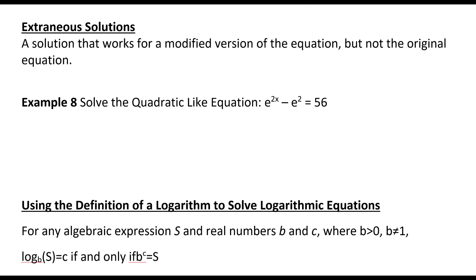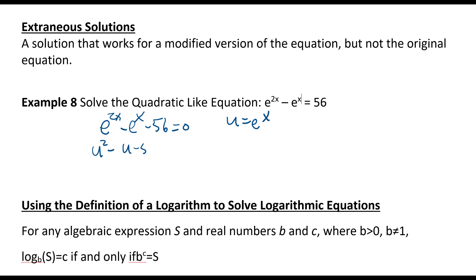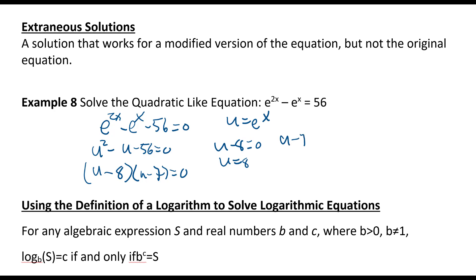Let's talk about extraneous solutions — a solution that works for a modified version of the equation but not for the original. For the equation e^(2x) minus e^x equals 56, subtract 56 to get 0. This is quadratic-like, so let u equal e^x. It becomes u² minus u minus 56 equals 0. Factoring gives (u minus 8)(u plus 7) equals 0, so u equals 8 or u equals negative 7.